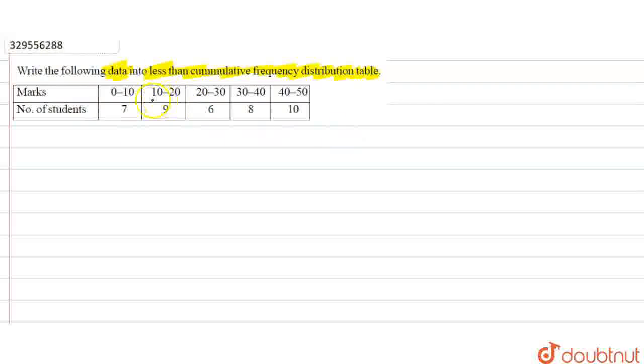We have to represent this data in less than format. Here we have marks. What marks are given here? The first column is marks. This is given 0 to 10, 10 to 20. What intervals are given? 20 to 30, 30 to 40, 40 to 50. Right? These are our intervals.